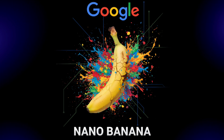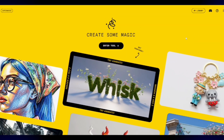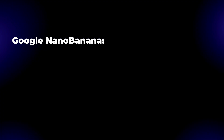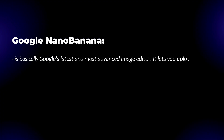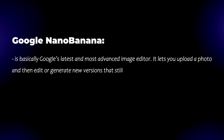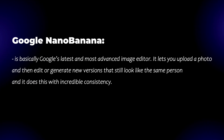So in this video, I want to show you another method — a new and really powerful way — thanks to something called Google Nano Banana, which is now integrated directly inside Wisk. Google Nano Banana is basically Google's latest and most advanced image editor. It lets you upload a photo and then edit or generate new versions that still look like the same person, and it does this with incredible consistency.